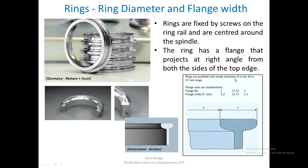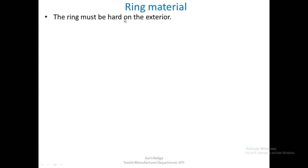Rings are available with inside diameter in the 36 to 57 mm range, and these are the flange numbers along with the flange widths. If the flange number is 1, the flange width in mm would be 3.2, and so on — as the number increases, the width also increases. In the cross section sketch, this is the flange width, and the ring diameter ranges from 36 mm to 57 mm.